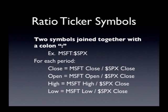A ratio ticker symbol is a ticker symbol where we have divided two data sets by each other and then turned that division result into its own ticker symbol, its own index. This is where you can invent your own index to a certain degree.